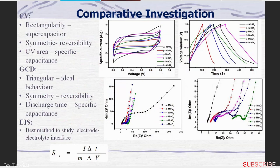We prepared all forms like alpha, beta, and gamma. Don't worry about the graphs. If it is giving a CV curve, normally it gives a rectangular shape, more or less. GCD gives a triangular shape, as I discussed. One more thing is EIS — electrochemical impedance spectroscopy — where you can study the charge transfer mechanism. These three things can tell you about your material, whether it is electrochemically good or what kind of output you can get.